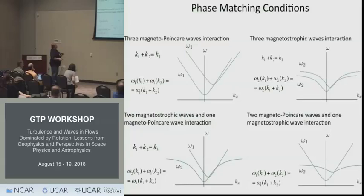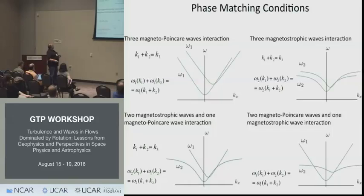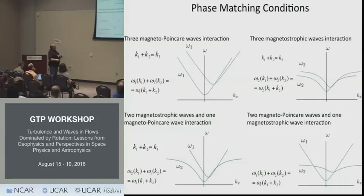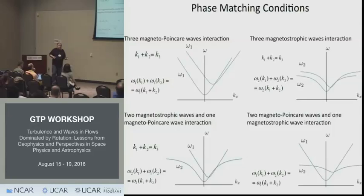Analysis shows that there may be three types of nonlinear three-wave interactions. Three magneto-Poincaré waves interact where dispersion curves intersect; three magnetostrophic waves interact; two magnetostrophic waves and one magneto-Poincaré wave interact; and two magneto-Poincaré waves and one magnetostrophic wave interact. So you have four types of three-wave interactions in the system. Once you understand these interaction conditions, you can derive three-wave equations for the amplitudes of the interacting waves.